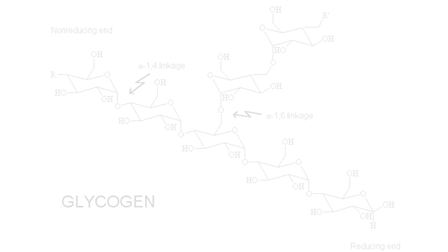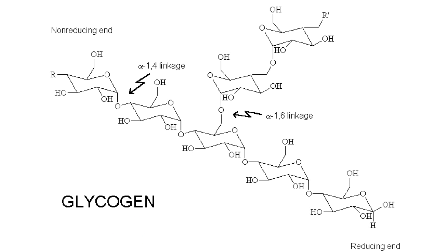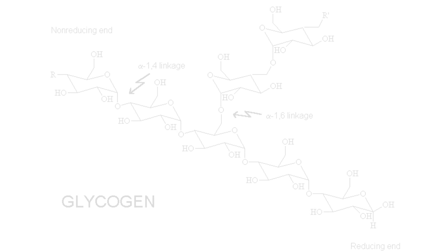Glycogen is a highly branched molecule made up of glucose monomers in alpha-1-4 linkages, with branch points at alpha-1-6 linkages — all glucose monomers. Glycogen phosphorylase can only get within four monomers of a branch point, so debranching enzymes come in to remove those four residues, and then a second activity removes the actual alpha-1-6 linkage by hydrolysis.